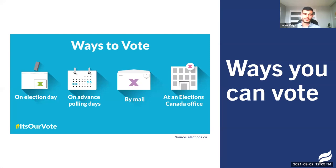You can vote on Election Day, September 20th. You can vote on Advance Polling Days, which open September 10th to September 13th. You can also vote by mail, which is becoming a very popular option in this election — Elections Canada is predicting millions of ballots being sent by mail. The deadline to apply to vote by mail is September 14th, so don't forget that if you choose that option. And as in every election, you can also vote within the Elections Canada office, but only until September 14th.